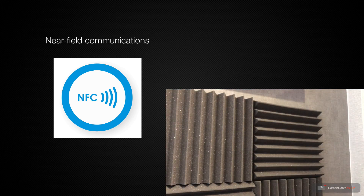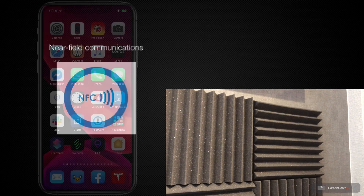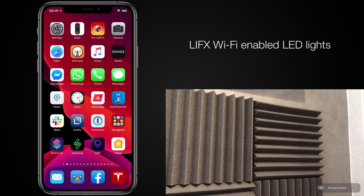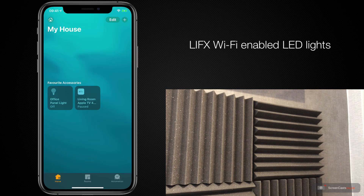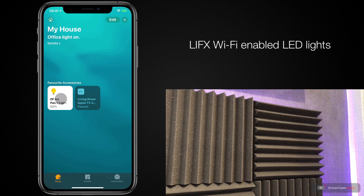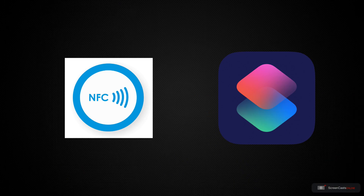The first example is switching some LED lights on and off using an NFC tag. I have a set of LIFX lights behind this acoustic panel and I've added them to HomeKit. As you can see, I can switch them on and off using the Home app. Rather than just opening the app or trying to remember a Siri command, I want to be able to stick an NFC tag on my desk and just tap it with my iPhone to switch them on or off. Let's go ahead and set up the automation.